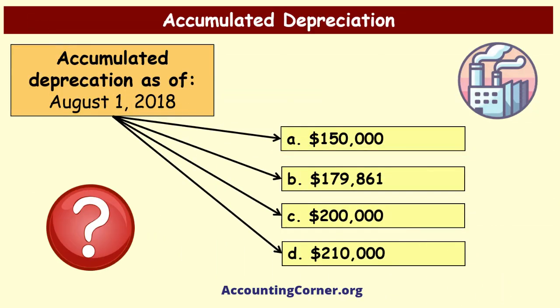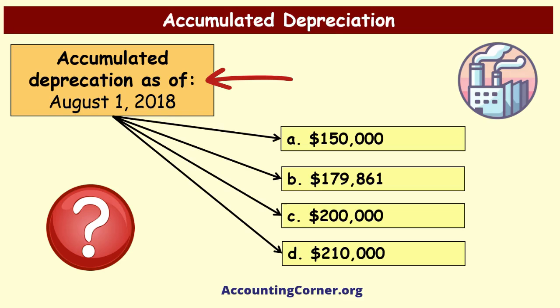Our task is to calculate the accumulated depreciation as of August 1st 2018, which is the asset sales date. We have four options to choose from, which you see on the screen.